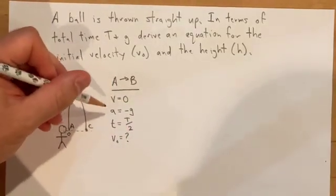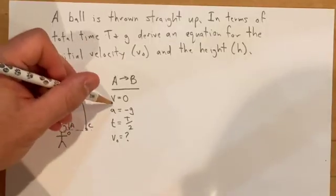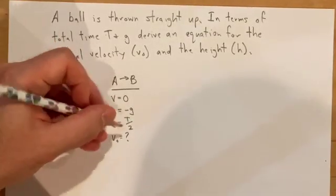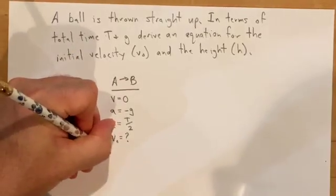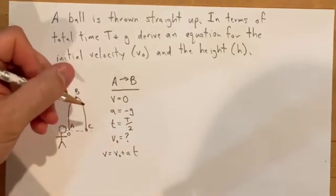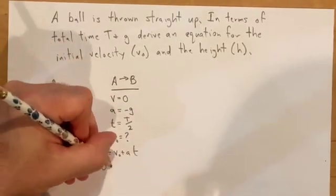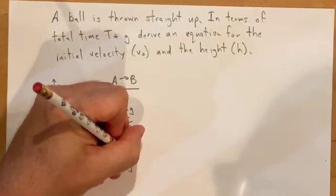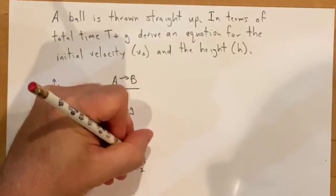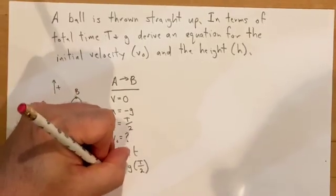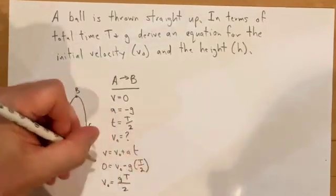Then you do: what equation doesn't have a y or displacement in it? And then you'd write down your equation and just plug stuff in. In this case, 0 equals v₀ minus g times T over 2, and then you bring that over and you get v₀ equals gT/2 as your answer.